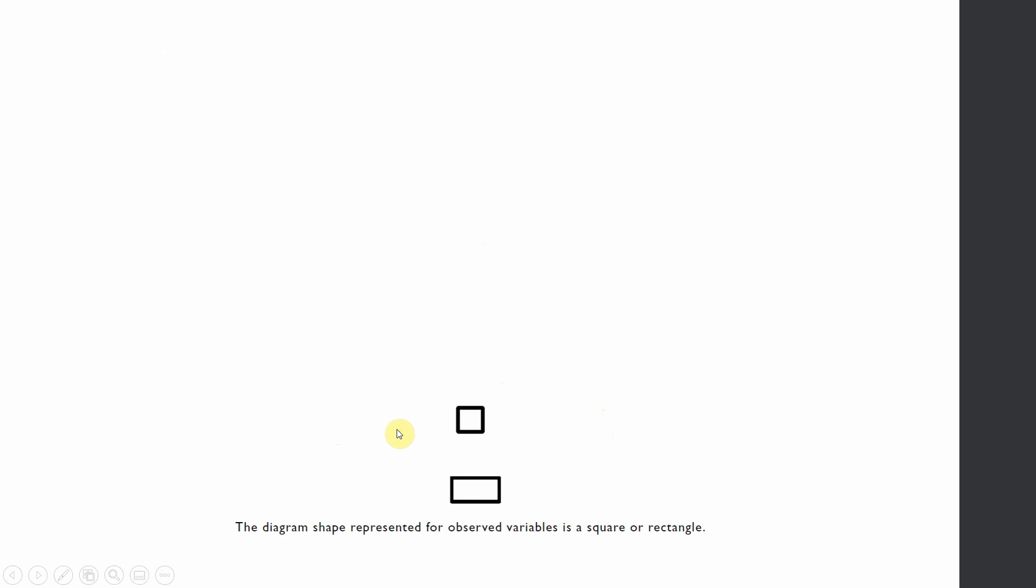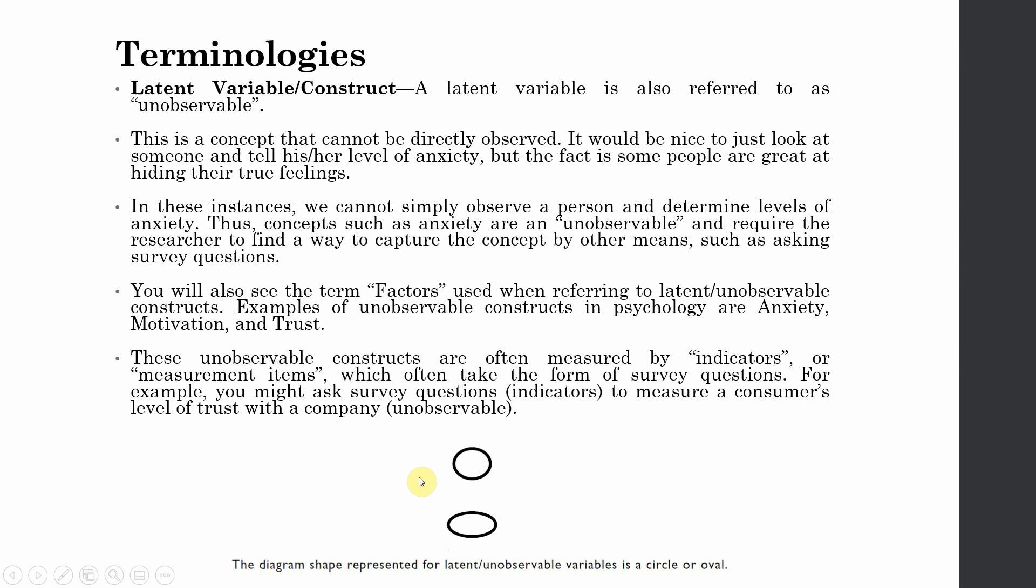In order to show unobservable constructs, we've got these symbols. These oval or circle diagrams are representing the unobservable latent construct.